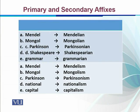For example, take the word 'Mendel' — when we add the primary suffix -ian, it becomes 'Mendelian,' and the stress moves to the syllable just preceding the suffix. So this primary suffix changes the stress. Consider: Mongol → Mongolian, Parkinson → Parkinsonian, Shakespeare → Shakespearean, grammar → grammarian. You can see how there is a shift of stress from the original syllable to the last stem syllable before the suffix.